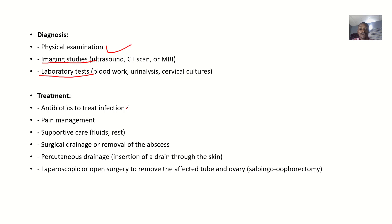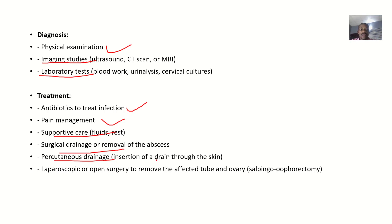For treatment, you might want to give antibiotics to treat the infection. You might also administer pain relievers and provide supportive care. You can also do surgical drainage or removal of the abscess — percutaneous drainage, which is insertion of a drain through the skin — or laparoscopic or open surgery to remove the affected tube and ovary, known as salpingo-oophorectomy.